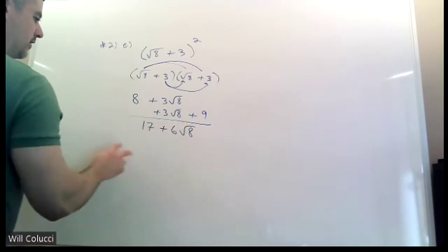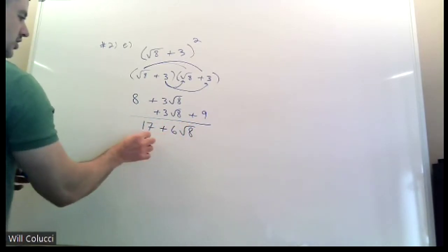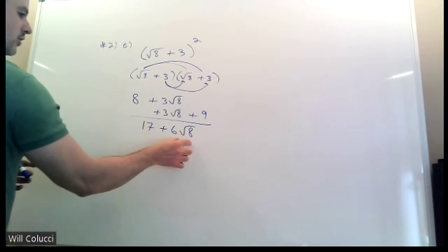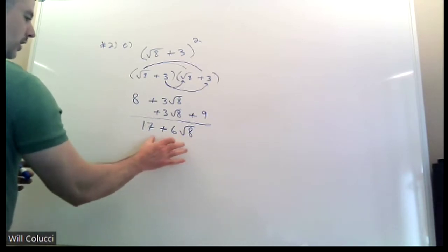No matter how tempting it is to add these numbers together, you can't. This is $17 and 6 apples. You can't make that 23 apples. Or $23. It just doesn't work. You can't combine them.